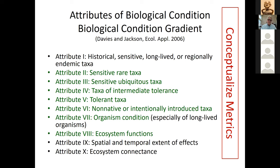One way we conceptualized biological condition was based on a paper by Susan Jackson and Davies published in 2006 in Ecological Applications, which characterized how to measure biological condition using sensitive and tolerant taxa, organism condition — for example abnormal diatom valves — and structure of the community species composition to infer ecosystem function. We selected metrics based on how the U.S. EPA defines biological condition, using a multi-metric index to more thoroughly characterize it.